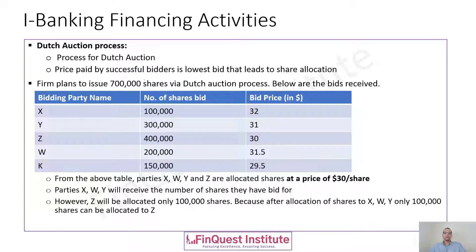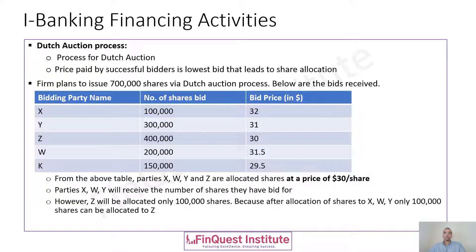No one is bidding for the entire 700,000; they are bidding for different units of shares, each at a certain price. For example, party X is interested in bidding for 100,000 shares at a price of $32 per share. As per the Dutch auction, we arrange buyers in descending order of price, so those who have bid the highest price come at the top of the picking order.